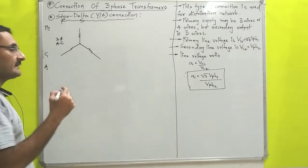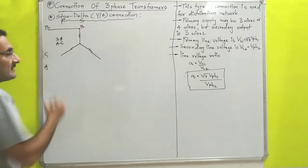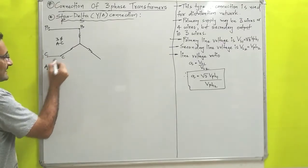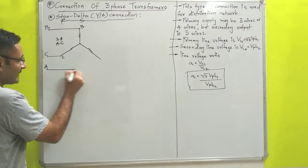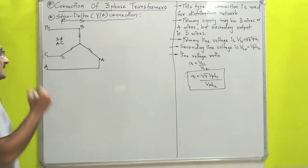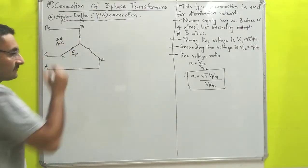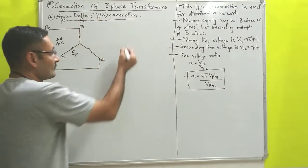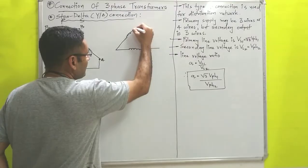For that purpose we will take one line conductor that will connect with point B — that will be our BB line conductor. Another line conductor will connect with point C — that will be our CC line conductor. One more line conductor will connect with terminal A, which is our AA line conductor. With these three terminals we will supply EMF to the primary side, which is EP. Now it has one secondary side also, which is delta connected. So we will draw the three-phase delta connection like that.